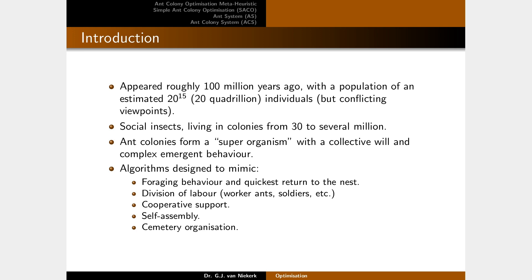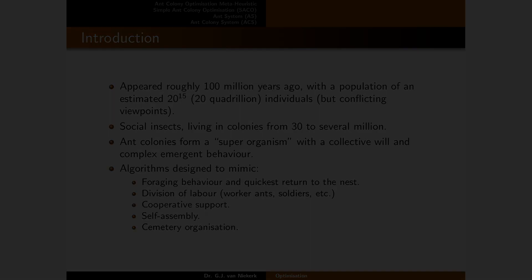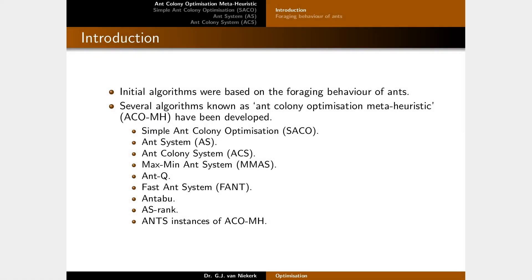There are various algorithms designed to mimic various behaviors of ants. These include the foraging behavior, division of labor, cooperative support, self-assembly, and cemetery organization. The initial ant algorithms were based on the foraging behavior of ants, specifically to find the optimal paths or cycles through graphs. There are several algorithms known as ant colony optimization meta-heuristics, and we're going to look at three mainly: the simple ant colony optimization (SACO), the ant system, and the ant colony system.